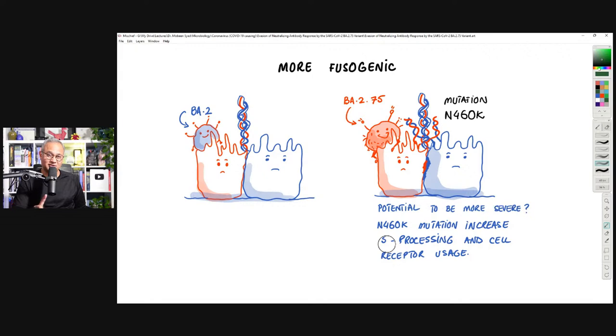And now this one big blob of a cell has many nuclei in them because every cell brought one nucleus to the table. Macrophages does that very often. And once the macrophages, which are part of the innate arm cells, once they do that, they become frustrated, they become upset and inflammation starts. So anyways, it is a little bit more fusogenic compared to BA.2, which means there may be a potential for it to be more severe.